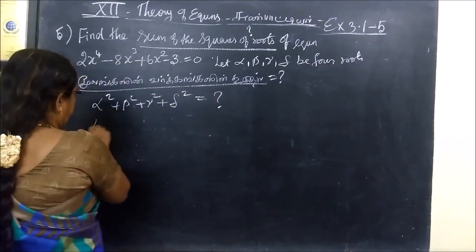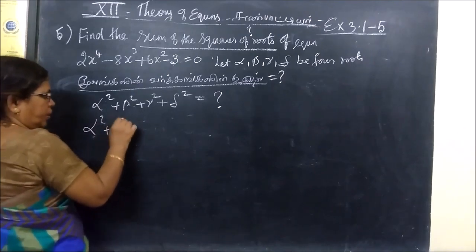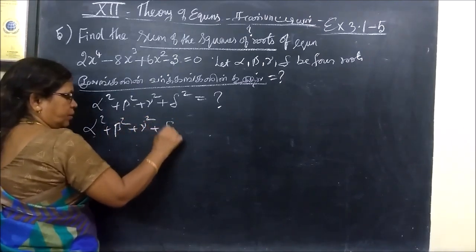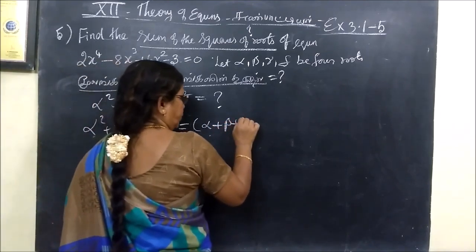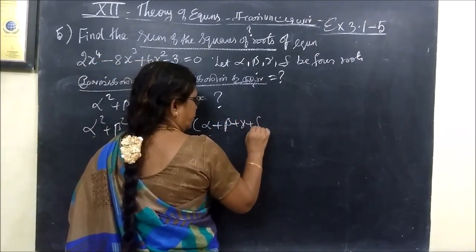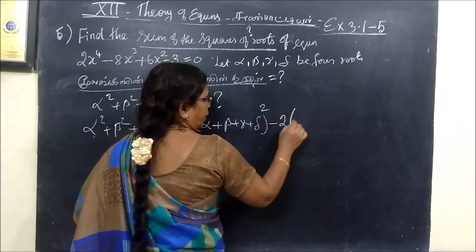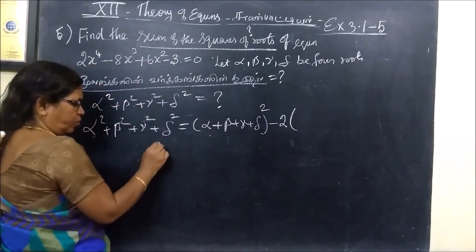Let's see the formula. Alpha square plus beta square plus gamma square plus delta square equals alpha plus beta plus gamma plus delta whole square minus two brackets. I will write this.